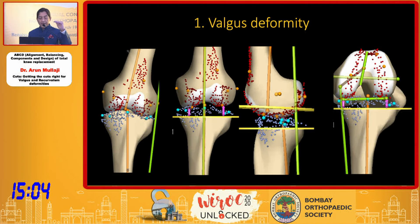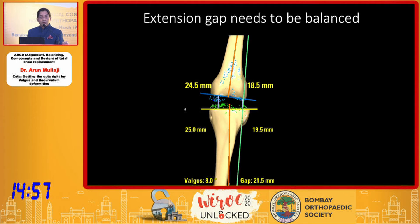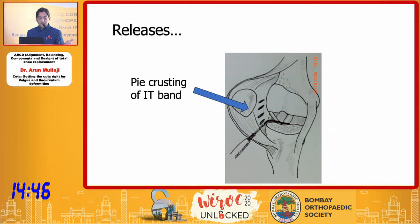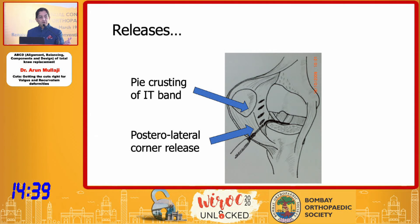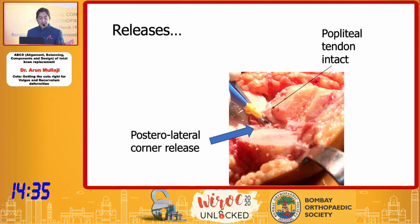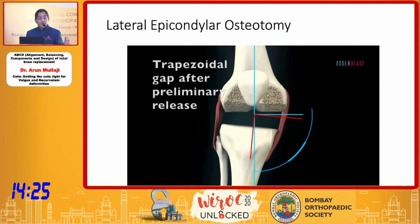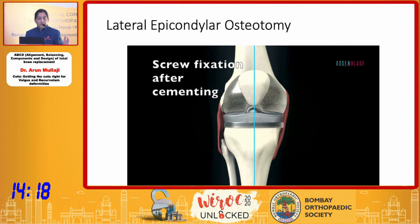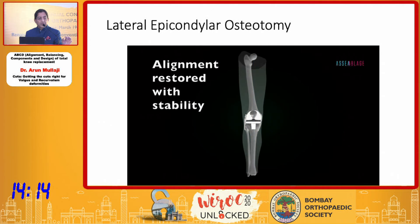The approach is: first make the tibial cut, then balance the extension gap, then check whether the flexion gap is tight or loose medially or laterally. If the extension gap is too tight laterally, your options are: first release the IT band, then release the posterior lateral corner — this usually suffices for most cases of valgus deformity. There is no need to release the popliteal tendon, as it does not contract. If the gap is still too tight laterally, perform a sliding lateral epicondylar osteotomy, bringing it distally by the amount required to achieve a perfectly balanced extension gap.